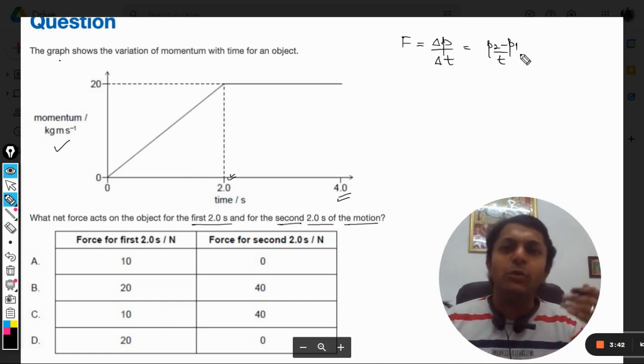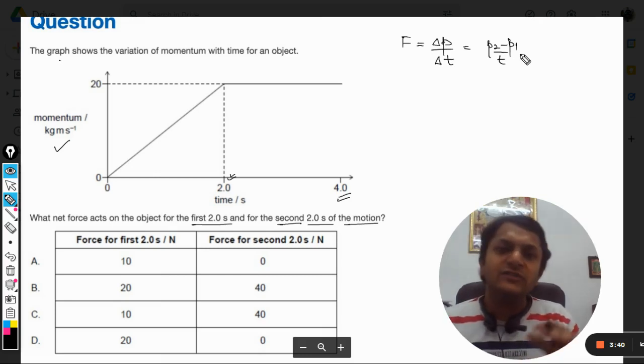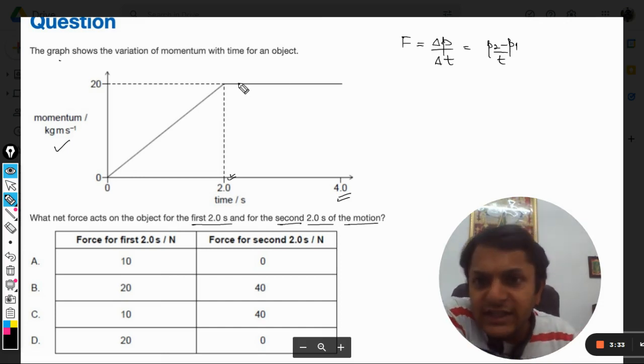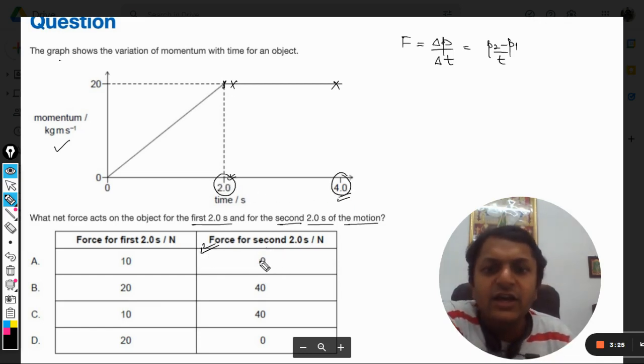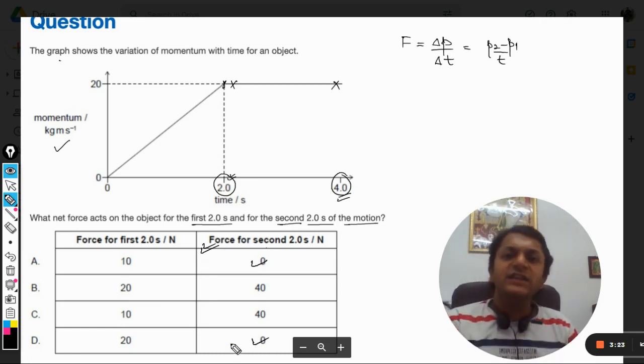Either the body is at rest or the body is moving with a constant momentum - that is, the velocity is constant and not changing. So from this point to this point, from two seconds to four seconds, the force for the second two seconds will definitely be zero because the momentum is constant and not changing anymore.